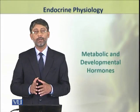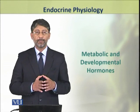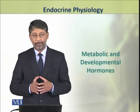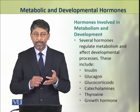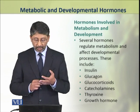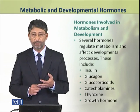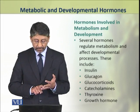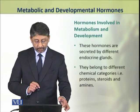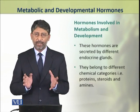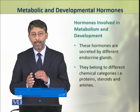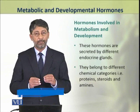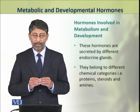Dear students, in this topic we shall discuss, simulate and tabularize all the hormones which are involved in metabolism and development. Several hormones that we have studied so far are involved in the regulation of metabolism and developmental processes. These hormones include insulin, glucagon, glucocorticoids, catecholamines, thyroxine and growth hormone. These hormones are secreted by different endocrine glands and belong to different chemical categories — they may be proteins, steroids or amines — but all have their role in metabolism and development. We shall summarize them.